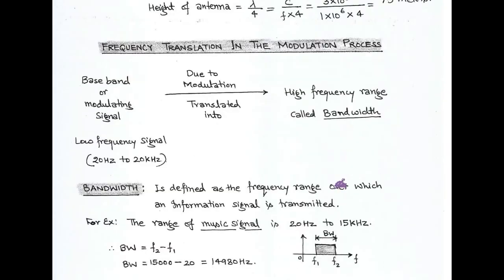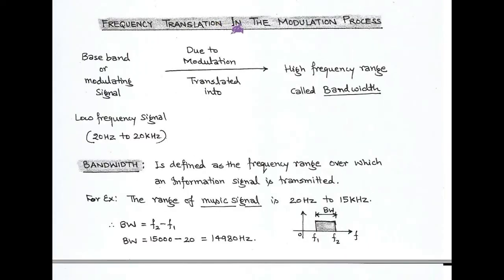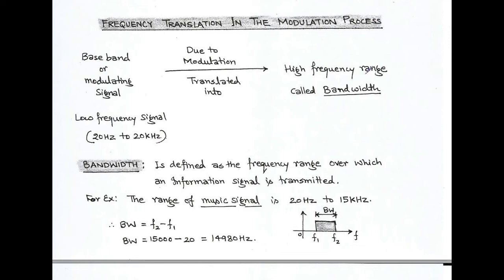In a modulation process there is a frequency translation. The low frequency baseband or modulating signals get converted into high frequency signals through modulation. The low frequency range is 20 Hz to 20 kHz, and after modulation we obtain a high frequency signal over some bandwidth. Bandwidth is defined as the frequency range over which the information signal is transmitted.